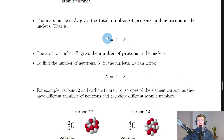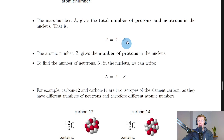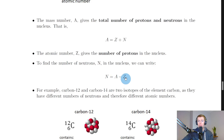Since the mass number is the sum of protons and neutrons, we can rearrange to find the number of neutrons. To find the number of neutrons N in the nucleus, we write N equals A minus Z. If we know the mass number A and the atomic number Z, we can find the number of neutrons in the nucleus.